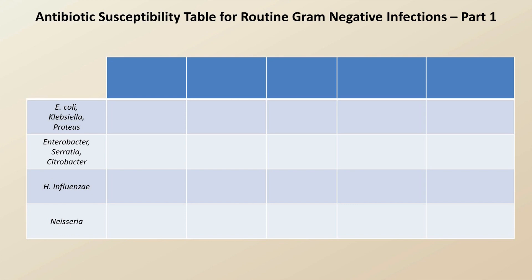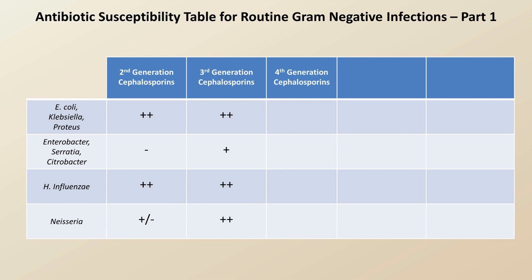As the first generation cephalosporins have poor gram-negative coverage, I'll start just with the second generation, which cover the E. coli, Klebsiella, Proteus group very well, along with H. flu. The third generation cephalosporins add good Neisseria coverage and some activity against the Enterobacter, Serratia, Citrobacter group. And the fourth generation cephalosporins, predominantly cefepime, show excellent activity against all of these.